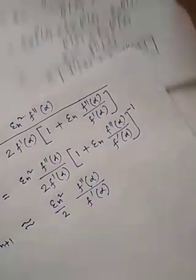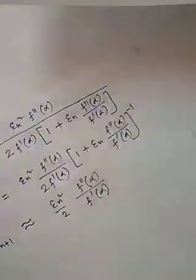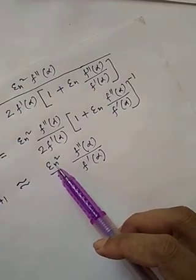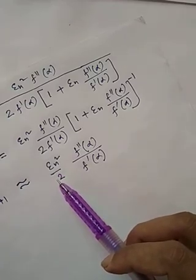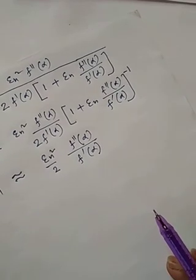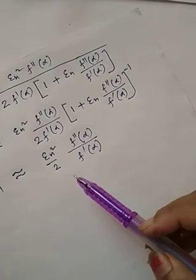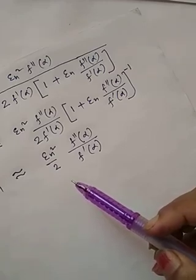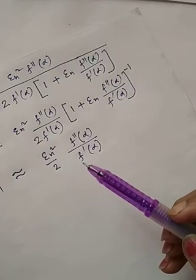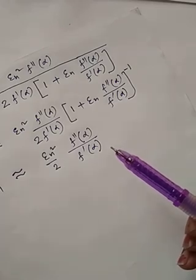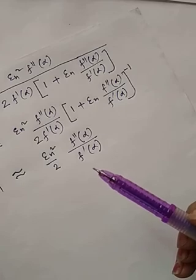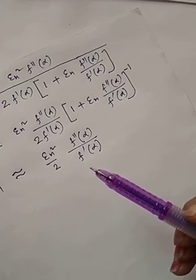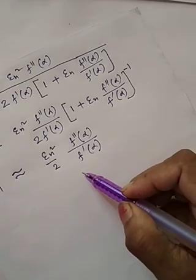This shows that at each iteration the absolute error epsilon_{n+1} is proportional to the square of the previous error epsilon_n, and hence this convergence is quadratic. So at the first iteration, if we have a correct answer to one decimal place, it should be correct to two decimal places at the second iteration, four places at the third, and so on — the number of correct decimal places is almost doubled at each iteration. Therefore this method converges very rapidly, and it converges quadratically.